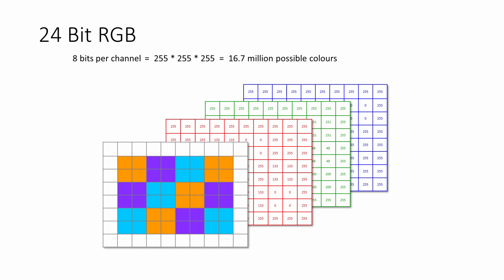Sometimes when people talk about eight-bit colour, they actually mean eight bits per channel, not eight bits per pixel. This can lead to some confusion. Eight bits per channel is actually 24 bits per pixel.